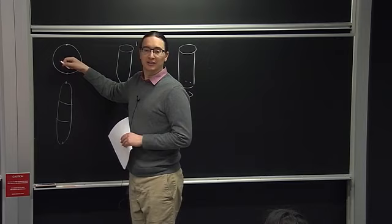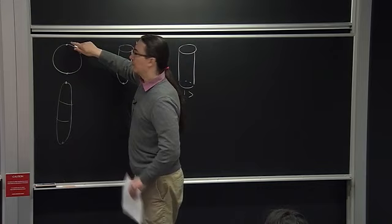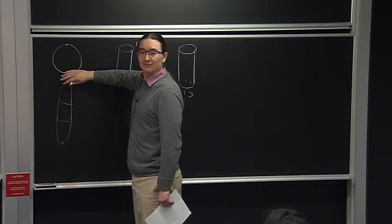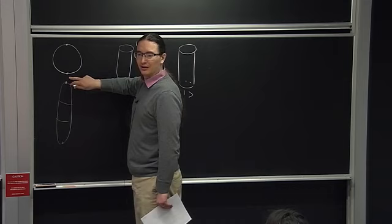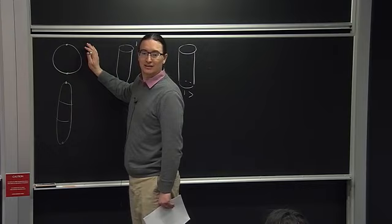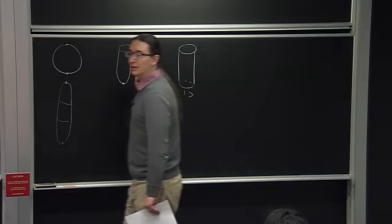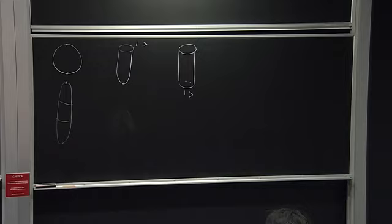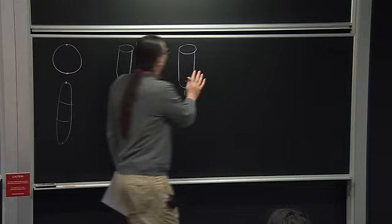Reflection positivity tells you that if you have any correlation function which is symmetric under some reflection, it's positive. So if you put here an operator and here a complex conjugate operator, you're guaranteed that this is a positive number, giving you a positive definite inner product on the space of operators — which is definitely a good inner product. For non-unitary theories, you need to check by hand that the inner product works, even if it's not positive definite.